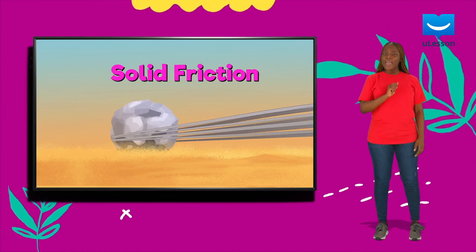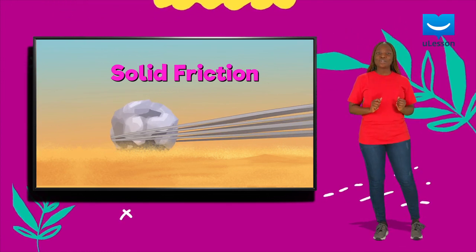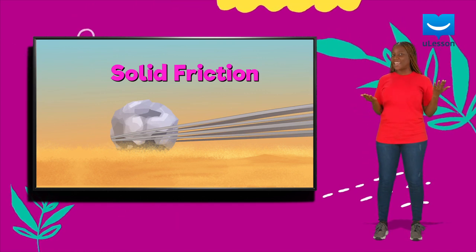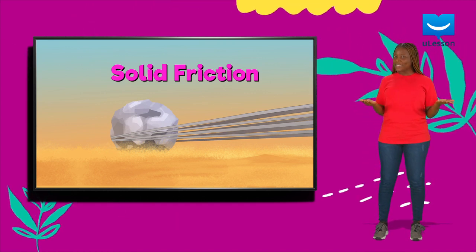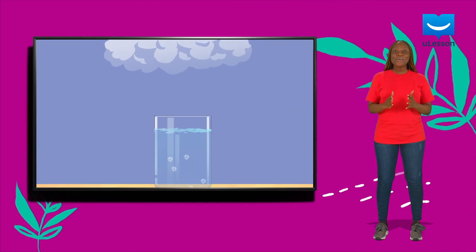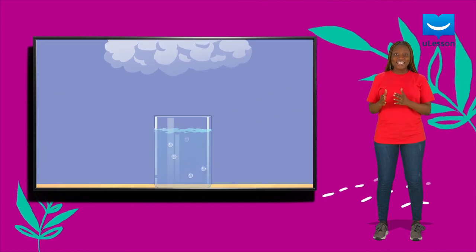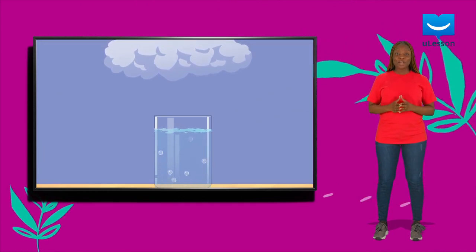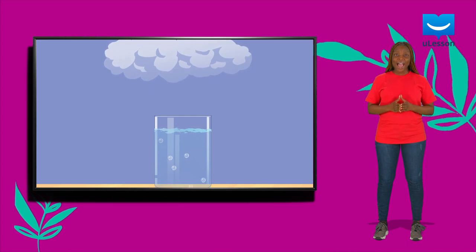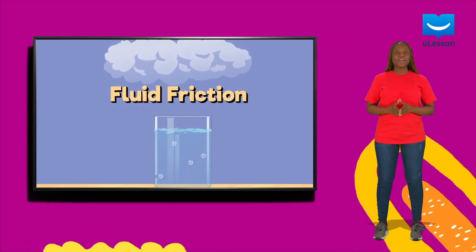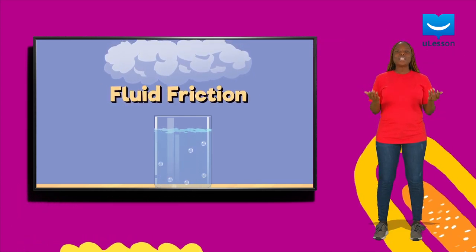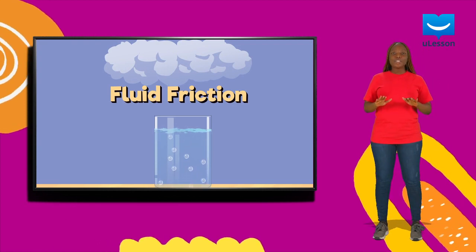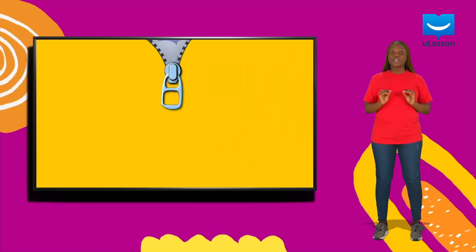But hold on. If we have solid friction, shouldn't we have liquid and gas friction? Exactly. Liquids and gases are called fluids, so this type of friction is known as fluid friction. Just like solid friction, fluid friction slows down motion as well.